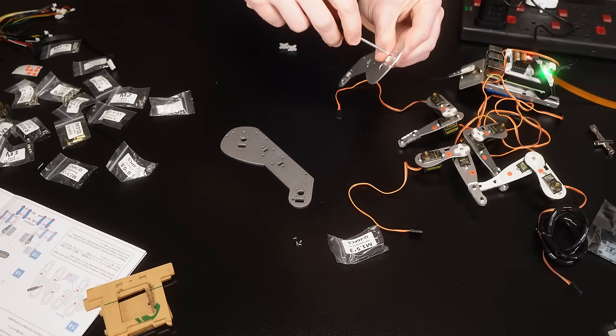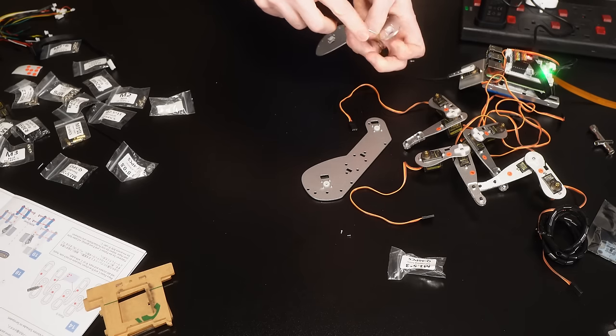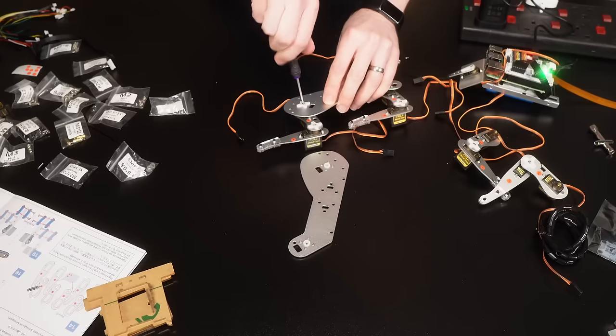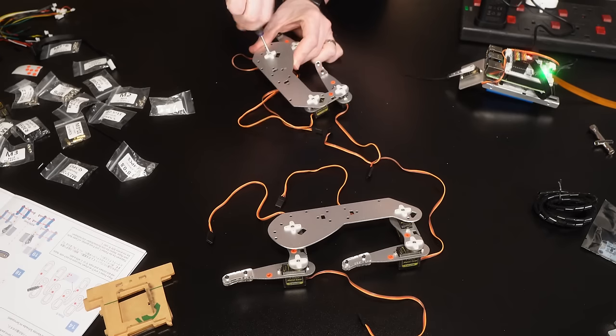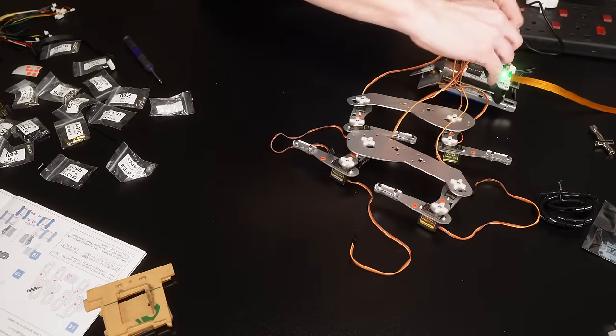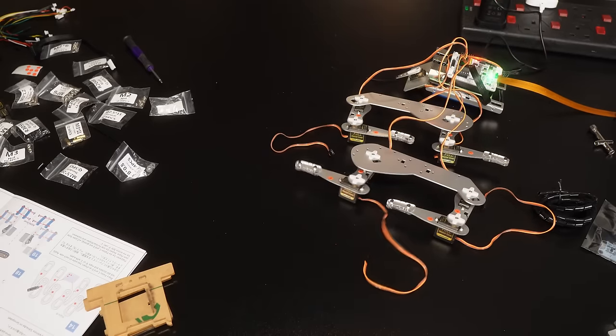So the next job is to start assembling the sides of the body. Some servo arms to install here with some more of those tiny self-tapping screws, again being careful not to over tighten. And then we can attach the legs to those, and I think this is where it's kind of starting to look a bit animal-like. Kind of. Again we need to run the script to zero the servos, and this isn't disturbing at all. Nope.